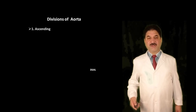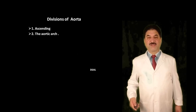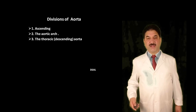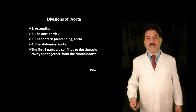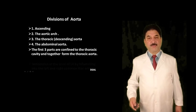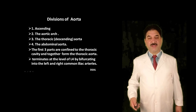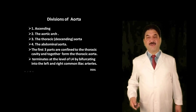Aorta is divided into ascending aorta, arch of aorta, descending thoracic aorta, and abdominal aorta. The first three parts are confined to the thoracic cavity and together form the thoracic aorta. After entering the abdominal cavity, it bifurcates into right and left common iliac arteries at the level of L4.